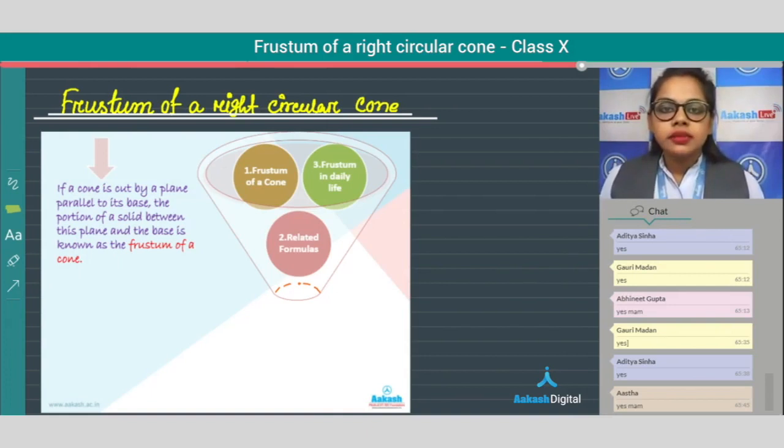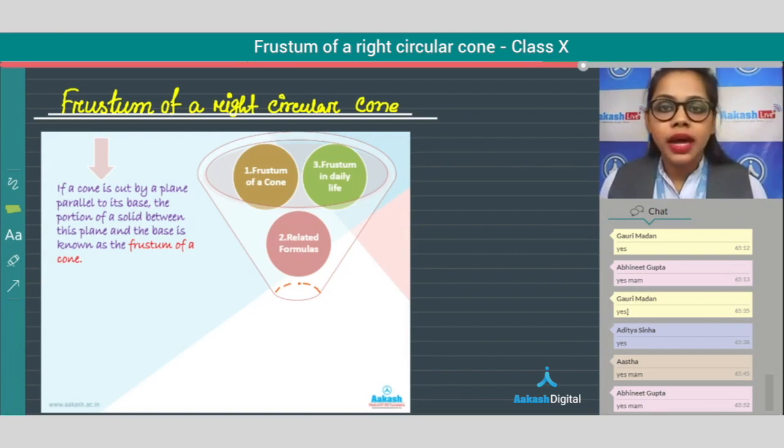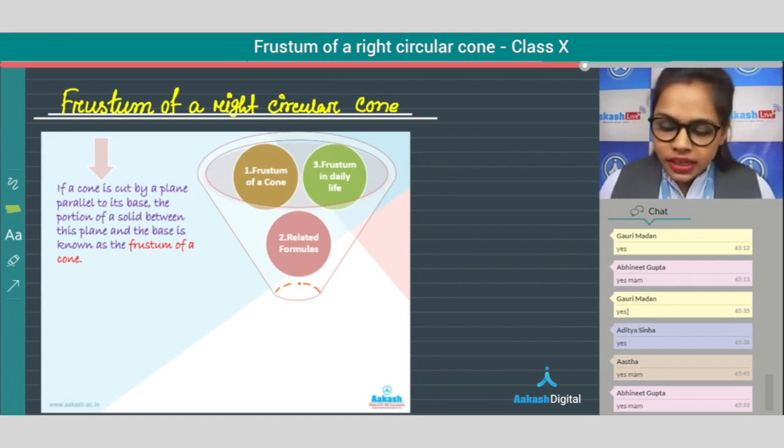Let's start with the frustum of a right circular cone. Now what is the frustum of a right circular cone? If a cone is cut off by a plane parallel to its base, then the portion between the plane and the base we call it as frustum of a cone.